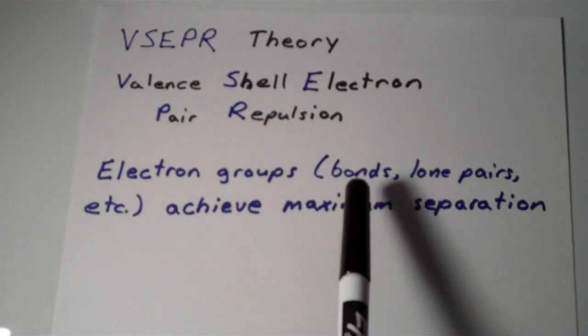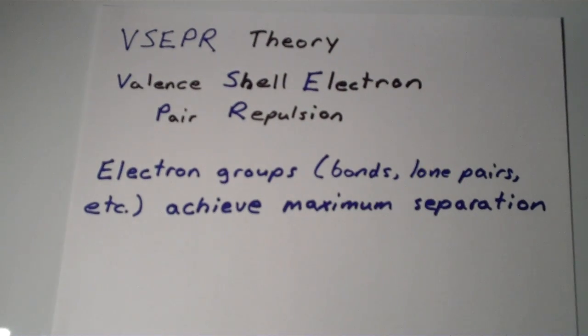Now these electron groups, they could be chemical bonds, they could be lone pairs, they could be double bonds, triple bonds, whatever. According to VSEPR theory, these electron groups space themselves out as far apart from each other as possible to achieve maximum separation.